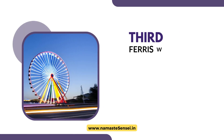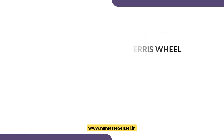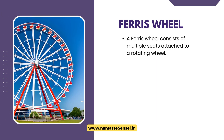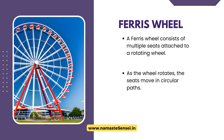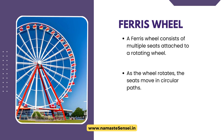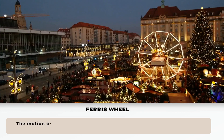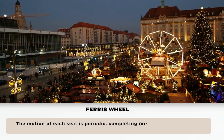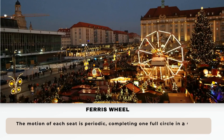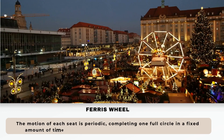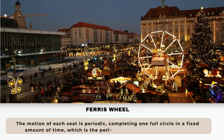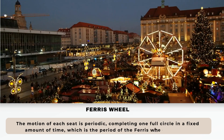Third, Ferris Wheel. A Ferris Wheel consists of multiple seats attached to a rotating wheel. As the wheel rotates, the seats move in circular paths. The motion of each seat is periodic, completing one full circle in a fixed amount of time, which is the period of the Ferris Wheel's motion.